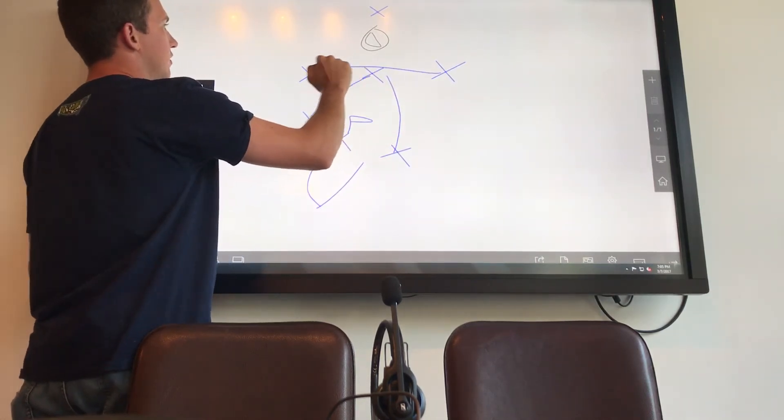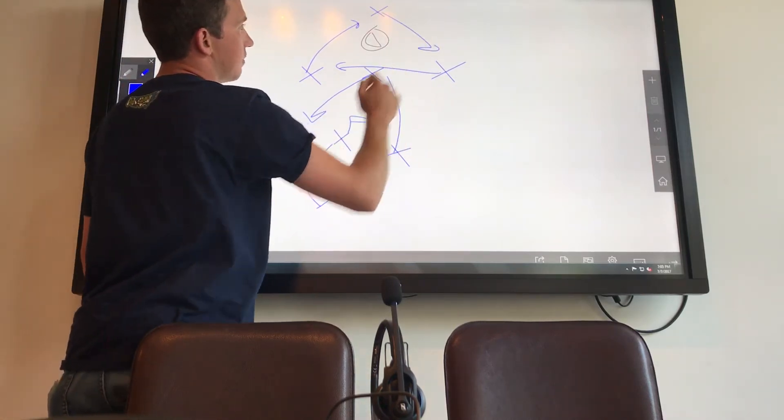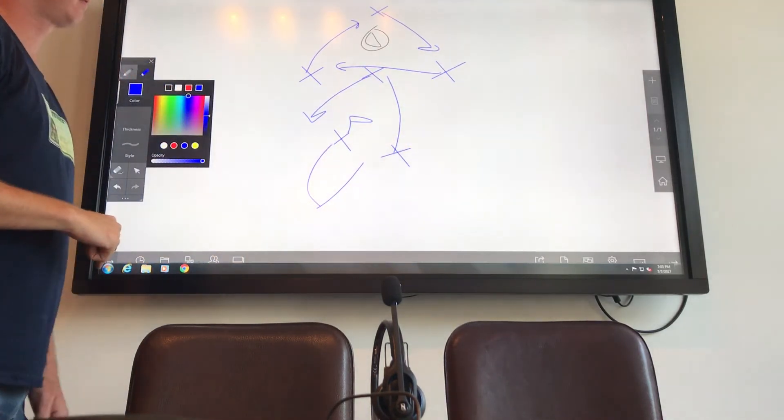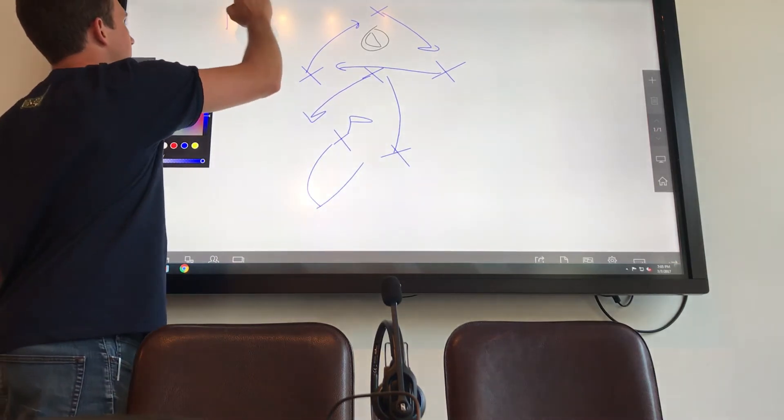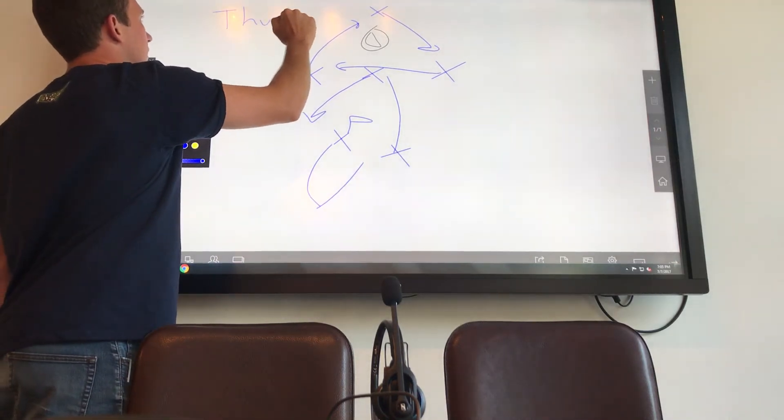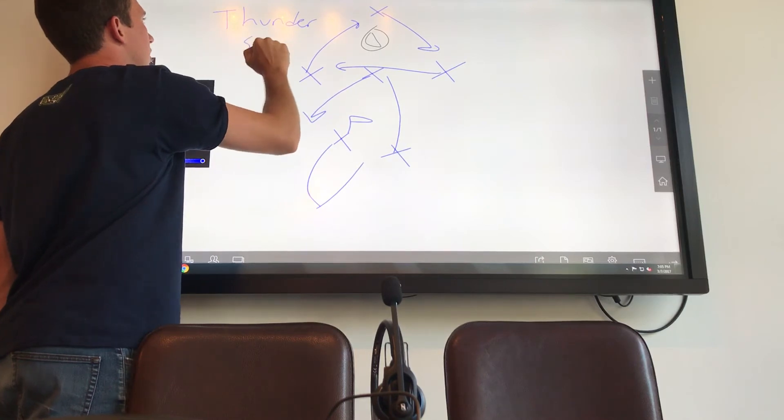And when he starts to run forward, attackman cuts across, attackman replaces the backside, attackman comes to pop to the wing to be some help. And that is Thunderstruck.